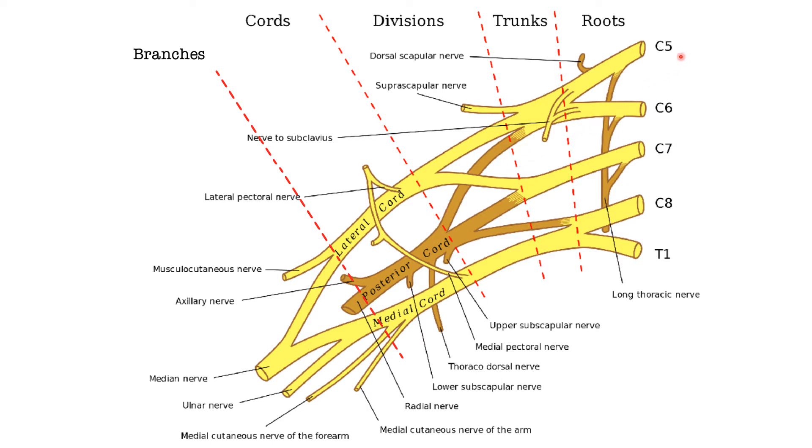So C5 and C6 are going to come together to form the superior trunk. C7 is just gonna run on its own to form the middle trunk, and then C8 and T1 will form the inferior trunk. So C5 and C6 superior trunk, C7 alone middle trunk, C8 and T1 inferior trunk.